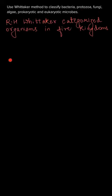In this question, we have to use the Whittaker method to classify bacteria, protozoa, fungi, algae, and prokaryotic and eukaryotic microbes. R.H. Whittaker categorized organisms into five kingdoms.